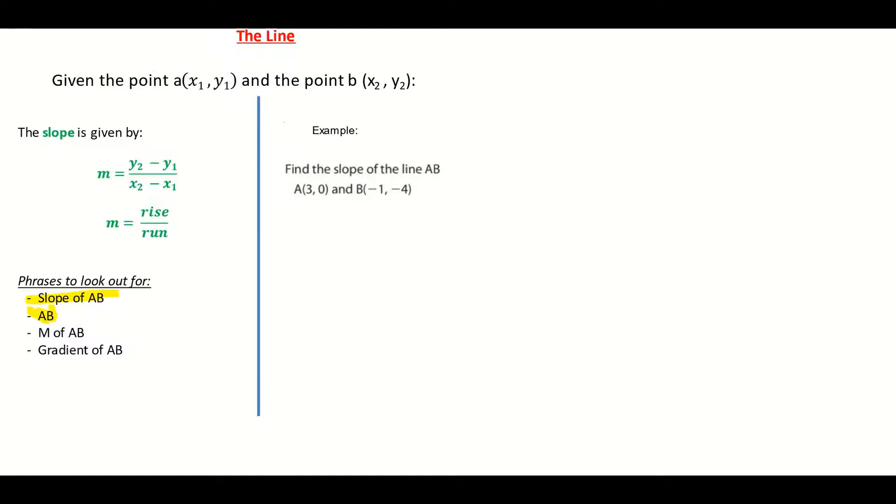The letter we use for slope is m, so it might say find m which relates to the slope, and another word for slope is the gradient, so they're just ways of writing the slope.